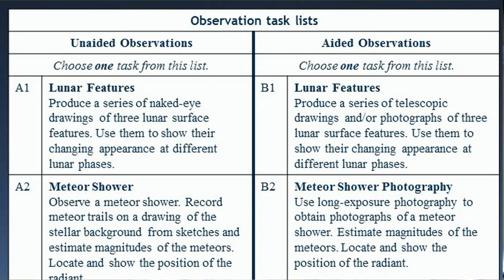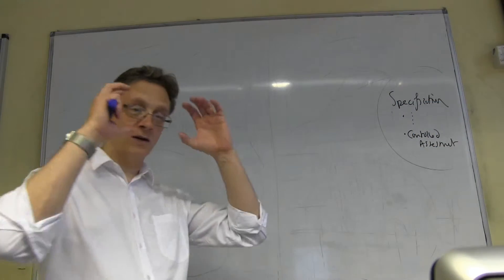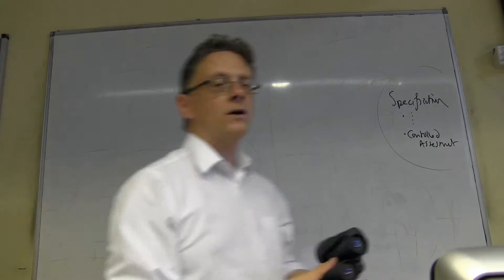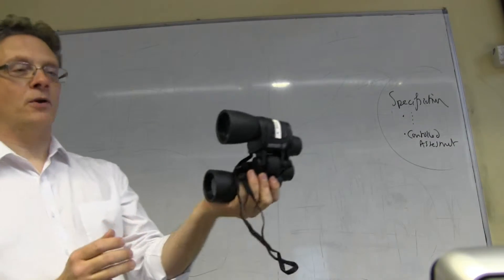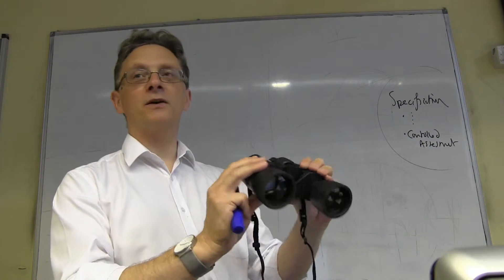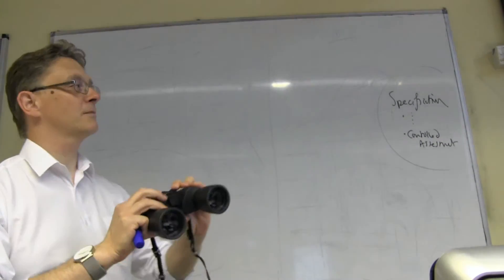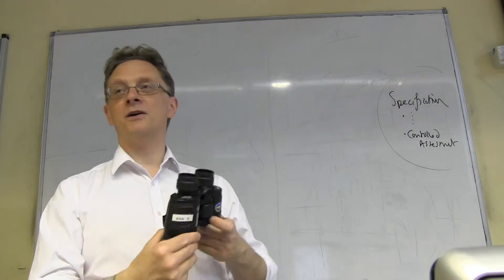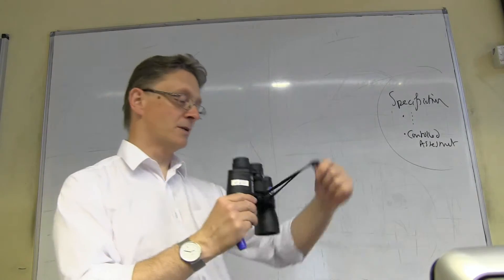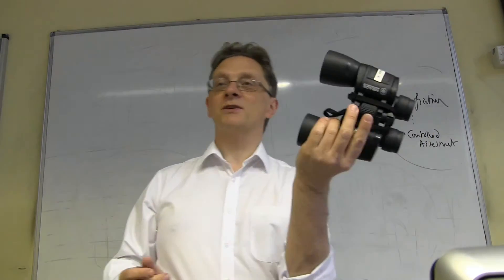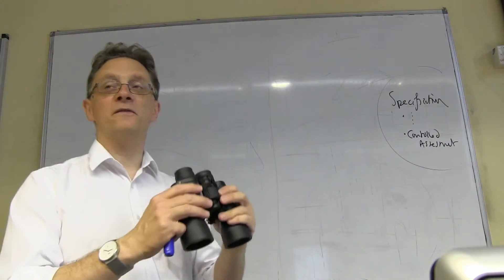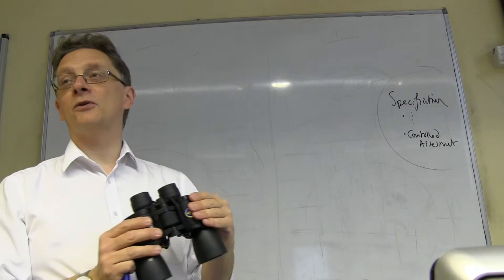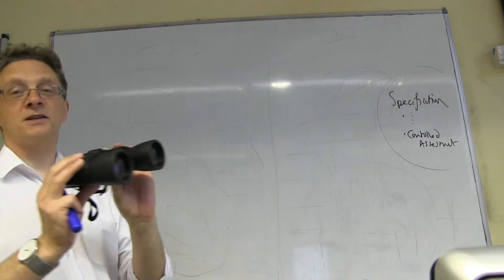However, you can also do B1. B1 is the same project but aided. You would get yourself a small pair of binoculars. For example, a pair of binoculars like this. The PTA bought these for us a while ago. We have about 10 sets of these, so if you wanted to borrow them for a few months, we can sign them out to you. Looking at lunar features, a pair of binoculars like this would be absolutely fine.